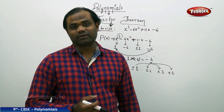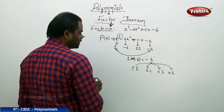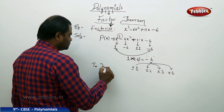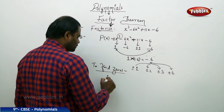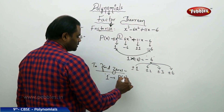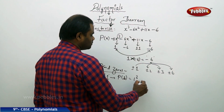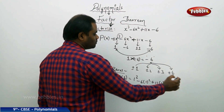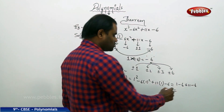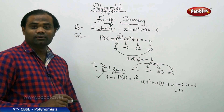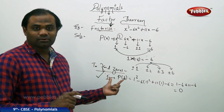Now comes the next rule: finding the zeros of the polynomial using these possible factors. I substitute values into the polynomial. When 1 is substituted, I get 1 cubed minus 6 times 1 squared plus 11 times 1 minus 6, which simplifies to 1 minus 6 plus 11 minus 6, giving 12 minus 12, which is 0. Therefore 1 is a zero of the polynomial. So x equals 1 is one zero identified.